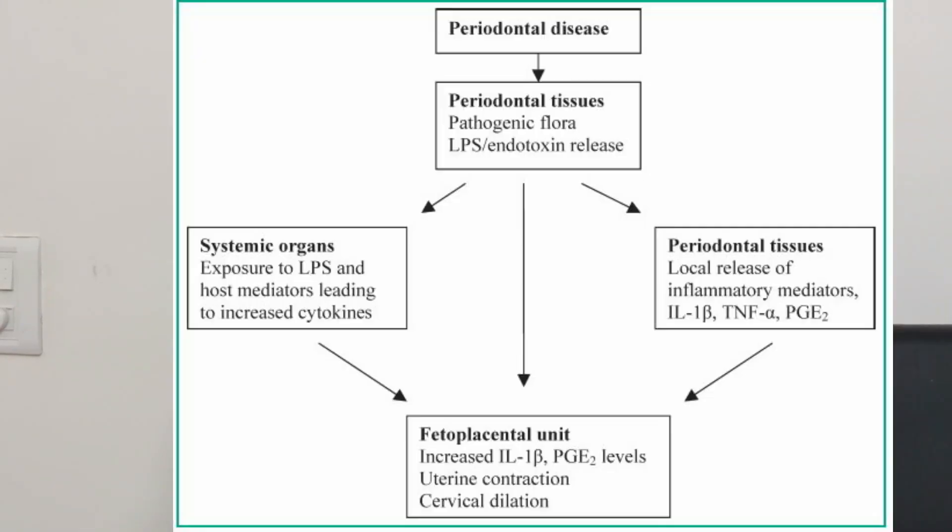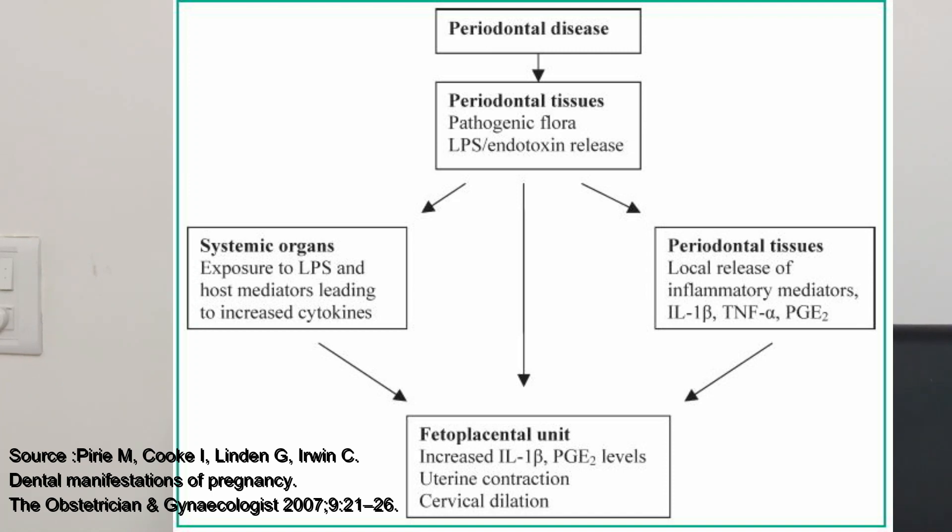Literature suggests that premature birth can occur in patients with periodontitis during pregnancy. When anaerobic gram-negative bacteria increase, lipopolysaccharides in the bacterial wall activate macrophages, leading to elevated inflammatory mediators — interleukin-1, interleukin-6, TNF-alpha — and increased matrix metalloproteinases. If these cross the placental barrier, they can result in premature birth, though this remains controversial.